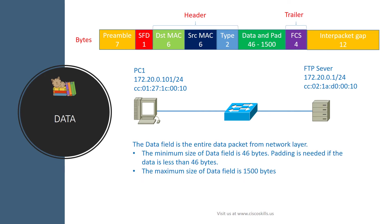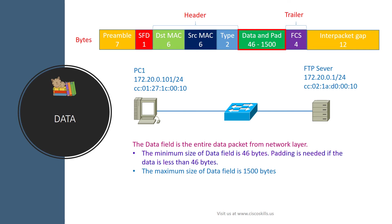After the type field is the data field. The data field carries the entire data packet from the network layer. The minimum size of the data field is 46 bytes — padding is added if the data is less than 46 bytes. The maximum size of the data field is 1500 bytes.